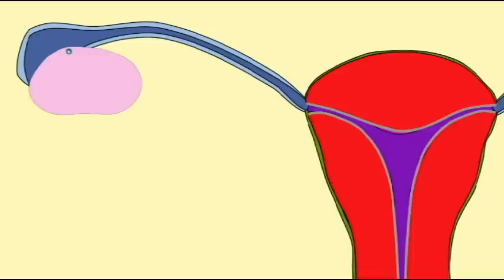During this time, they are moving both through the action of their flagellar tails, but then also as a result of uterine contractions resulting from the prostaglandins in semen, causing these contractions in uterine muscle.